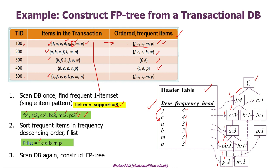For the second transaction, which is F, C, A, B, M, we first encounter F — its count is now incremented to 2. Then F to C — again the count of C along this path is incremented to 2. Then we have A, whose count is incremented to 2 along this path. Then we have to add B, so from A we add another node B. At the end of this transaction ID we add M along the path F, C, A, B, M with a count of 1.